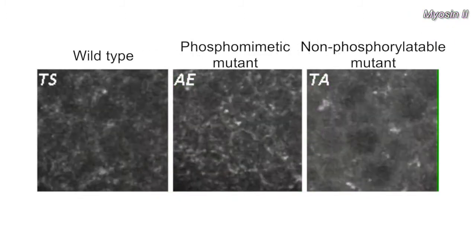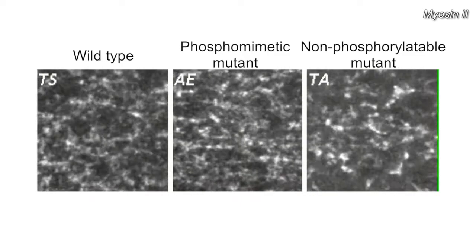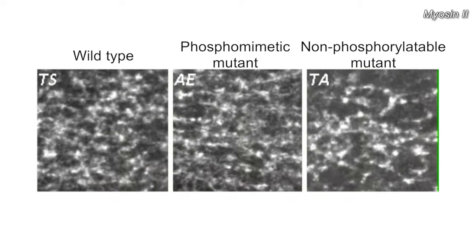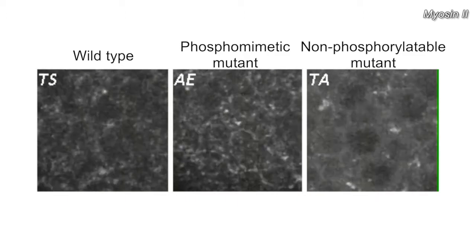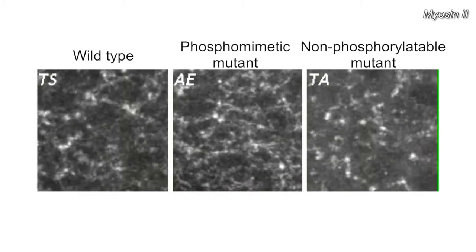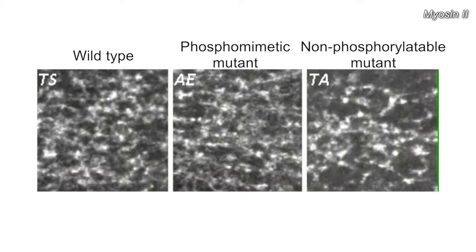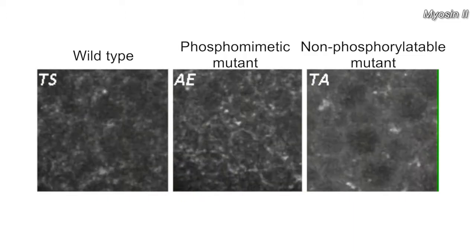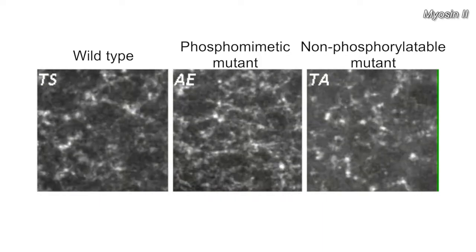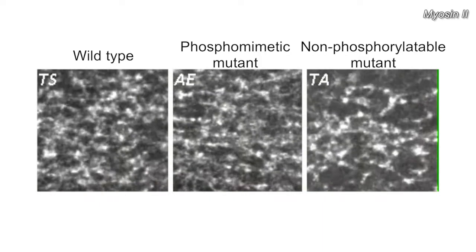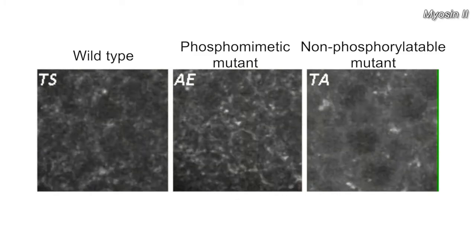In other words, myosin's phosphorylation state must be dynamically regulated to determine the correct organization and timing of contractile pulses. Vasquez et al. therefore examined the localization and function of myosin phosphatase, which opposes the ROCK-mediated phosphorylation of myosin-2.